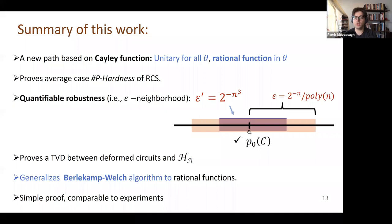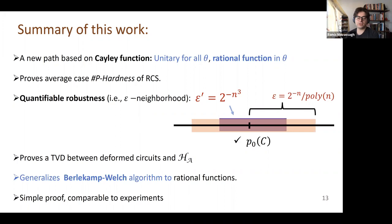We'll prove the average-case hardness of this point and a neighborhood of it without any extra assumptions. The epsilon is not 2^{-n}/poly(n) but 2^{-n³}. Some technical ingredients: I had to prove a total variation distance bound between the Haar distribution and these deformations under the Cayley function, which requires some random matrix theory. For the reduction to work, there is a classical algorithm called Berlekamp-Welch—remarkable in coding theory—which I had to generalize from polynomials to rational functions.